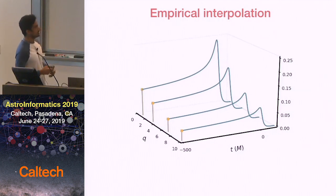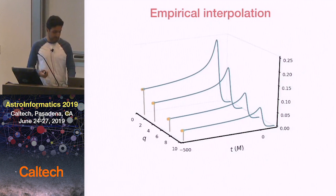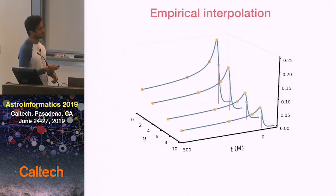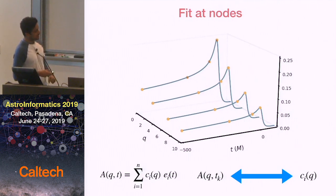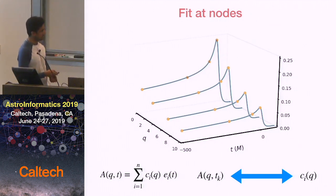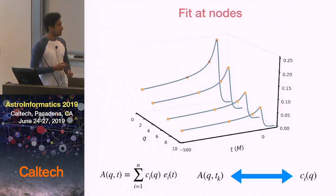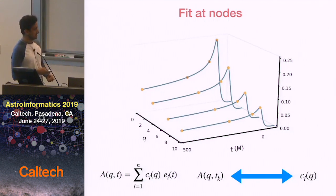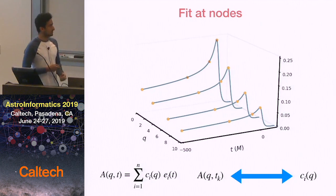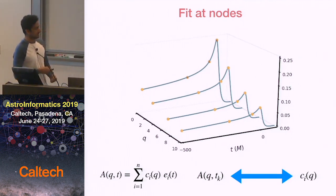We can do the same in the time direction, which is done with the method called empirical interpolation. This picks out the most representative time values and builds an interpolant in time using just those few time values. Now we've also reduced our data in the time direction to just a small set of values. To evaluate the amplitude at some generic mass ratio where we don't have data, we need the coefficients to multiply the basis. We can compute the coefficients for each case by inverting the equation and using orthonormality of the basis. But we don't know the coefficient value at some intermediate point, so we want to build fits across parameter space for each of those coefficients.